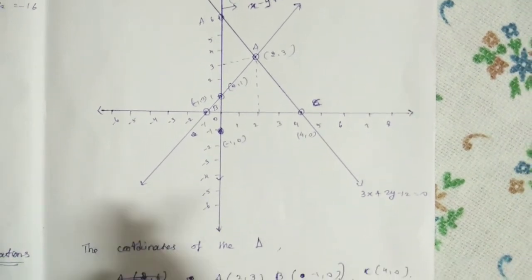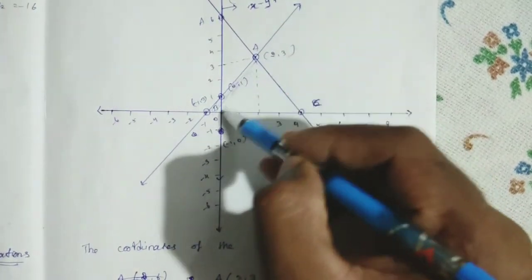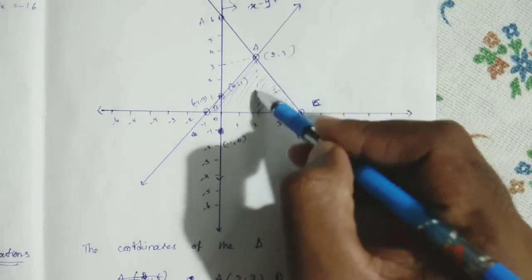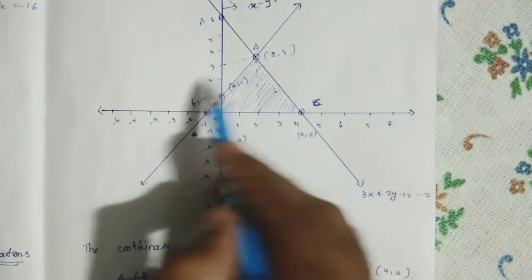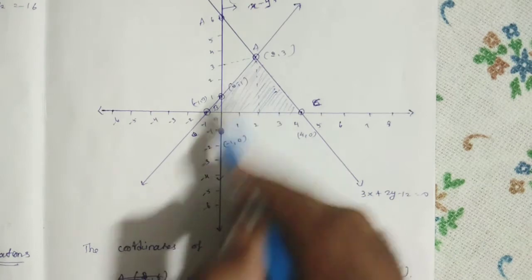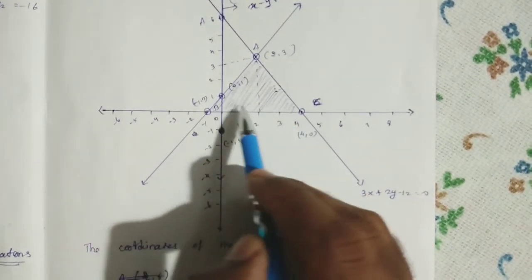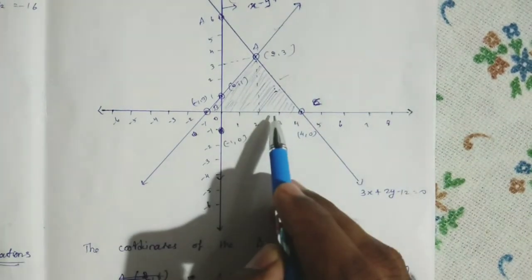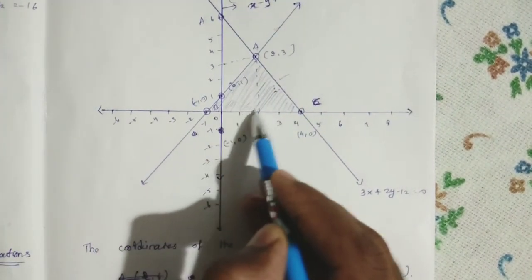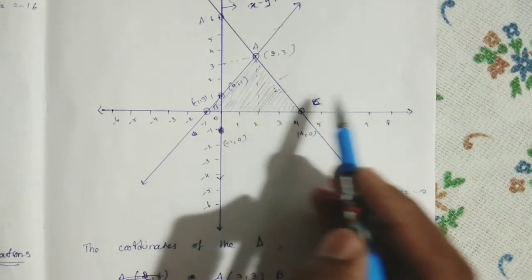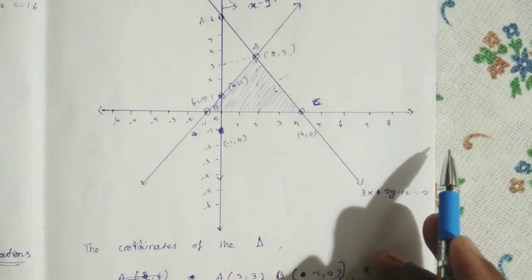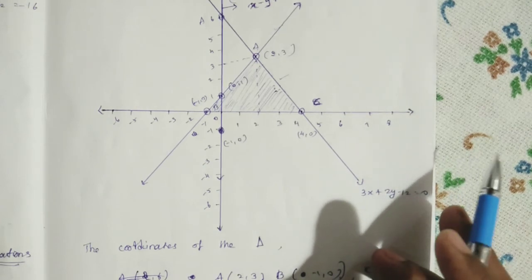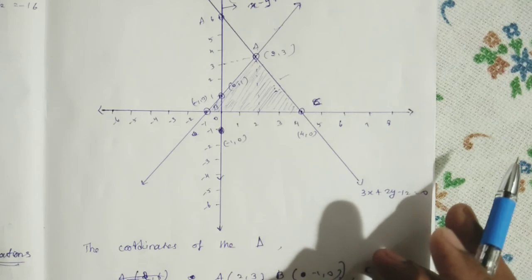Now shade the region of the triangle. The region is covered by the two lines and the x-axis, which form the three sides of the triangle. Shade that enclosed region. I hope this video was clear for problem number 7. If you have any doubt, ask me in the comments. I'll include a few practice problems. Thank you for watching.